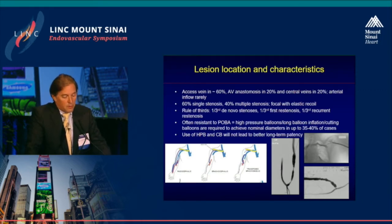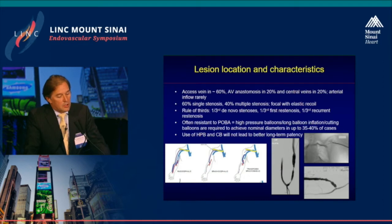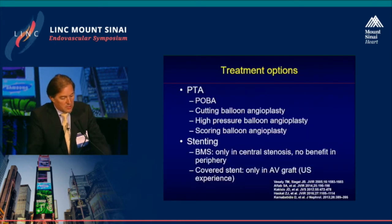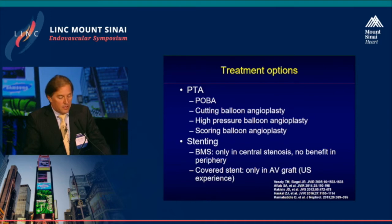One-third of cases are de novo stenosis, one-third are first restenosis, and another third are recurrent restenosis. These lesions are often very resistant to POBA — you need high-pressure balloons, long balloon inflations, or cutting balloons to achieve a normal diameter in up to 35–40% of cases. However, use of high-pressure or cutting balloons will not lead to better long-term patency, meaning less than 50% of patients still have a patent fistula after balloon angioplasty. Treatment options include POBA, cutting balloon, high-pressure balloon, and more recently scoring balloon angioplasty. Stenting does not have a place in peripheral lesions — only in central stenosis — and covered stents have a role only in stenosis at the end of an AV graft, not a native AV fistula.